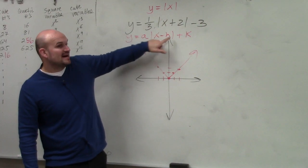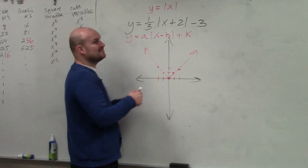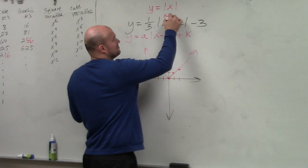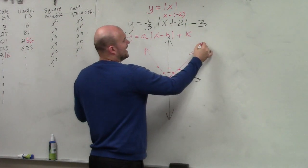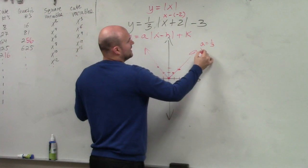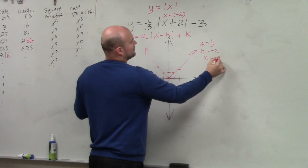Remember, it's x minus h. Well, this is x plus 2. Can I write this in the form x minus h? Yes, x minus negative 2. So therefore, a is 1/3, h is negative 2, and k is negative 3.